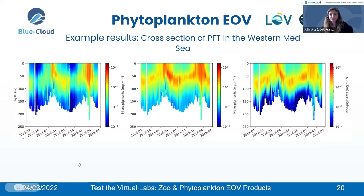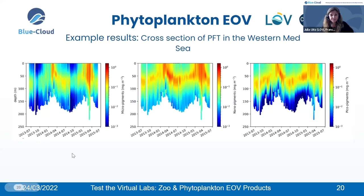In the Ligurian Sea — Northwestern Mediterranean Sea — we observe each year an increase of biomass in the surface layer of the ocean, coinciding with the recurrent spring bloom in the western Mediterranean basin. This is followed in summer by a deepening of the biomass and an increased contribution of small phytoplankton, coinciding with the summer oligotrophic period. This is very consistent with expected knowledge of the distribution of biomass and PFTs in the global ocean.